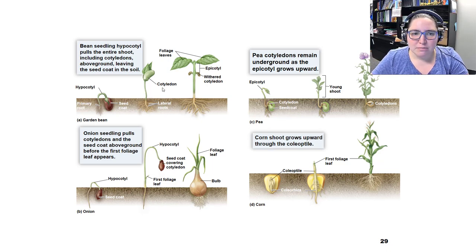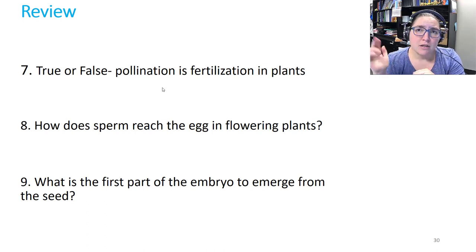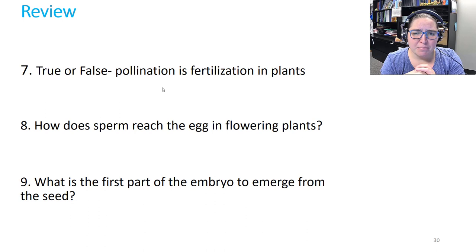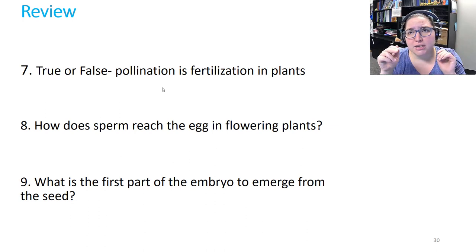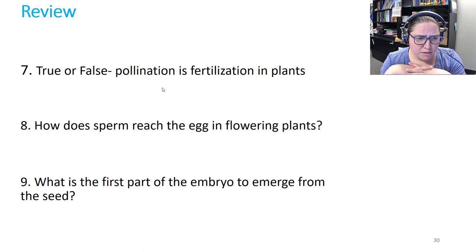Number seven — true or false: pollination is fertilization in plants. That is false. Pollination is when pollen gets on the stigma; fertilization is when sperm gets to the egg. Number eight: how does sperm reach the egg in flowering plants? Pollination occurs, the pollen tube germinates and reaches the ovule, and then sperm goes from the pollen tube into the embryo sac. Number nine: what is the first part of the embryo to emerge from the seed? That would be the embryonic root, the radicle.